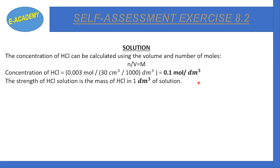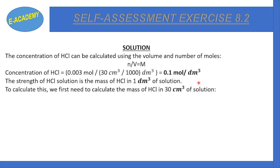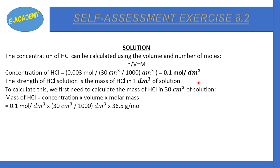The strength of HCl solution is the mass of HCl in one decimetre cube of solution. The mass of HCl formula is: concentration × volume × molar mass. Volume is 30 cm³, concentration is 0.1, and the molar mass of HCl is 1 + 35.5 = 36.5 g/mol. Solving this gives a mass of HCl of 0.1095 g.